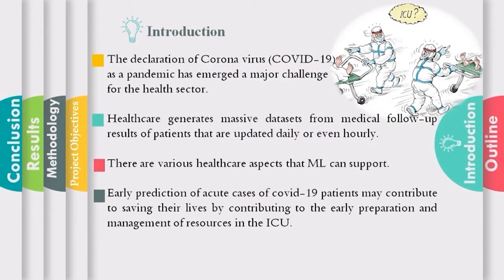The declaration of COVID-19 as a pandemic has emerged as a major challenge for the health sector, given the increase in number of infections and the variation in symptoms, which range from mild cases that can be treated at home to intense cases that require hospitalization. There is still a gap between the number of infections and the ability to deal with them in terms of available resources. Healthcare generates massive datasets from medical follow-up results updated daily or even hourly, and machine learning can support early prediction of acute COVID-19 cases, contributing to early allocation of ICU resources.